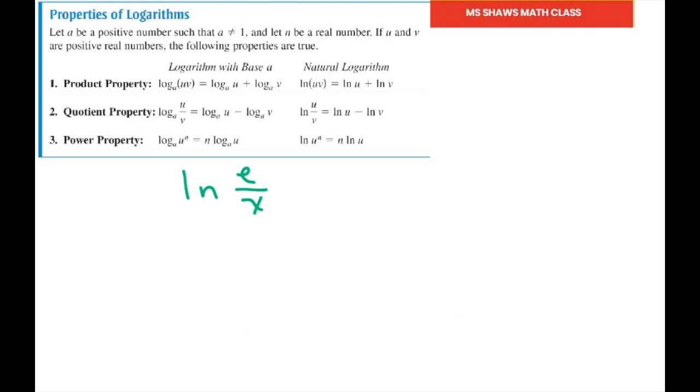Next one is kind of very similar. But in this case we're using the quotient property. So we have ln of E minus ln of X. So ln of E is 1 minus ln of X.